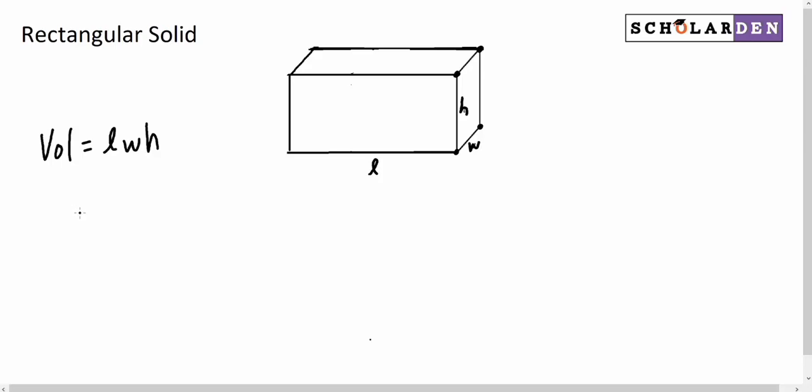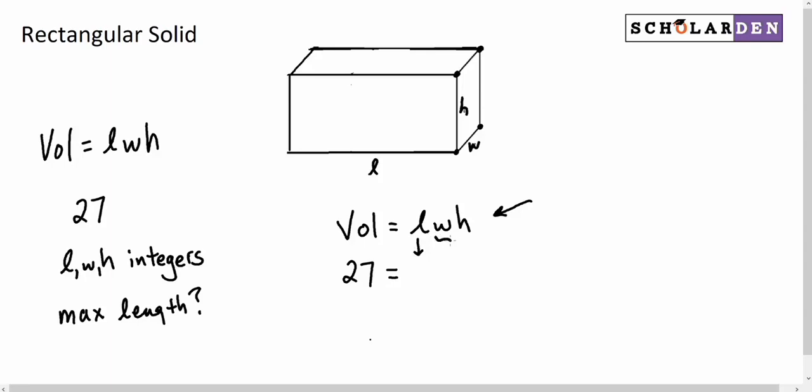Say you were told that the volume of a rectangular solid was 27, and that the length, width, and height were integers. And you were asked, what's the maximum possible length? Well, we'll write again the formula here. The volume is length times width times height. We know the volume is 27. We know these are all integers, and we want to maximize the length. So, that means we want to minimize these two dimensions and still make them integers. So, what is the lowest possible integer we could make them? They could both be 1. Height of 1. Width of 1. Now, we know we need to multiply to 27, so that would have to be a 27 for this to work out. 27 times 1 times 1 is 27. So, the maximum length is 27.